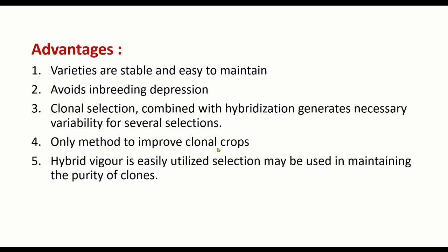Clonal selection is the only method to improve clonal crops — it is the most viable method for improving asexually propagated crops. Hybrid vigor is easily utilized: since the clone is heterozygous, hybrid vigor is attained and can be maintained easily by asexual mode of reproduction, because the heterozygosity persists.